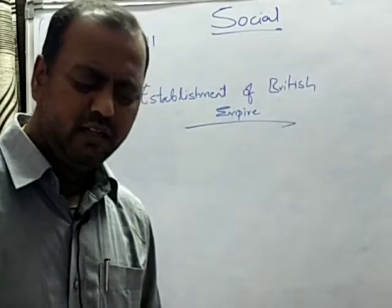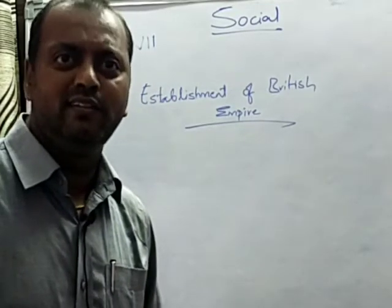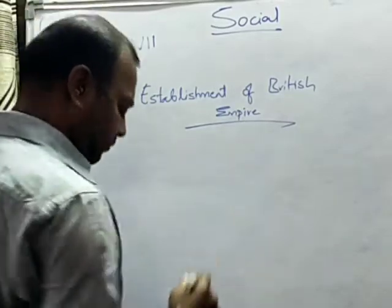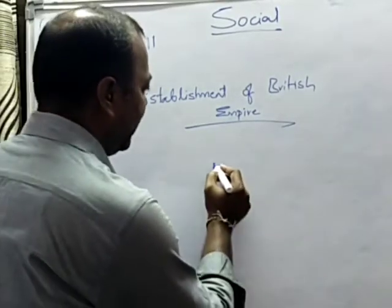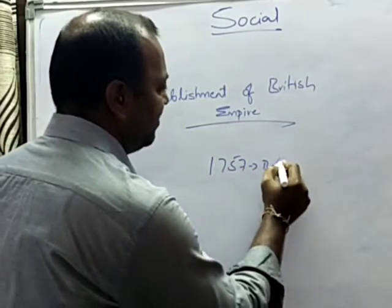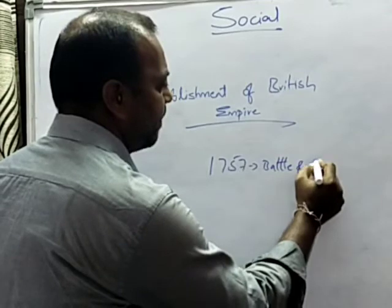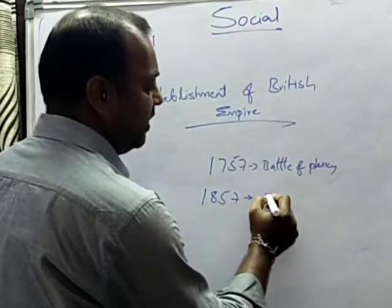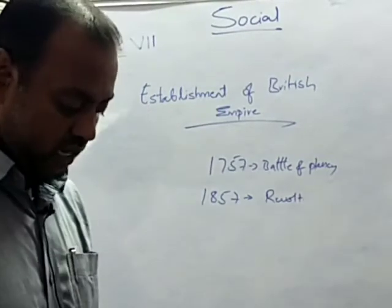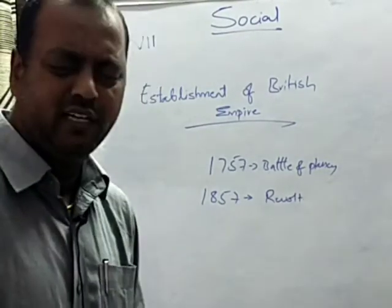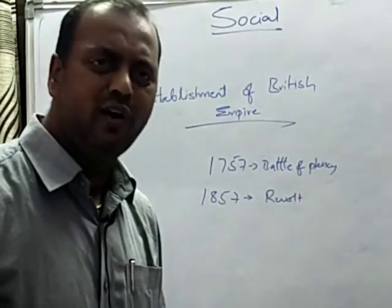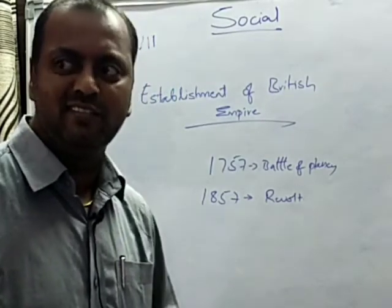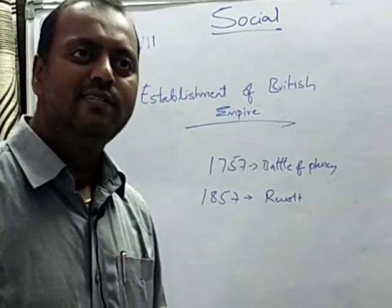The English faced their toughest battle in 1857 — that is after 100 years from the Battle of Plassey in 1757. This 1857 revolt is considered the first revolt against the British Empire, and we will also learn how this revolt ultimately failed. The British rule was uprooted over almost the entire northern India region during this period. This revolt was started by the Sipais — the soldiers in the British army — and for that reason it is called the Sipai Mutiny.